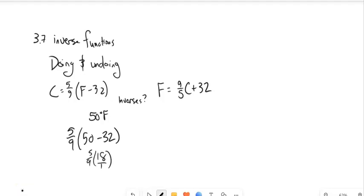5 ninths times 18, let's see, 9 goes into 18 twice, is 10. So that should be about 10 degrees Celsius. All right, interesting. And that makes sense to me because this is higher than freezing, this is higher than freezing.